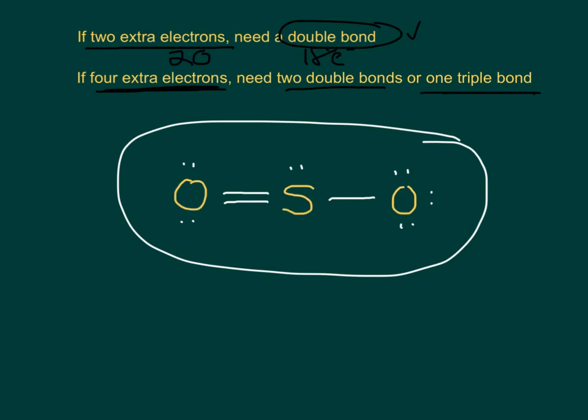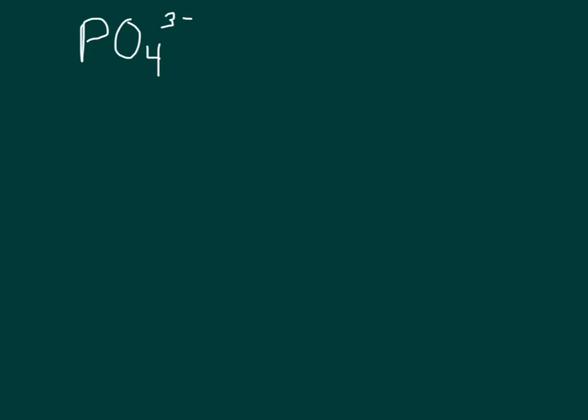Let's do that with a couple more molecules for practice. I'm going to throw an ion in here right away so you can see what you do with those. So first step, remember, count valence electrons. If I look at the periodic table, phosphorus has five, and I have four times each oxygen has six. Because there's a three minus charge, I have to add three more electrons. If it were a positive charge, I would have subtracted them. So how many does that come out to? Looks like 32 to me.